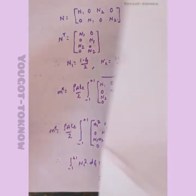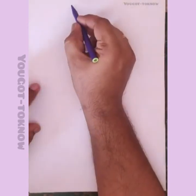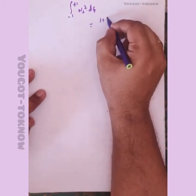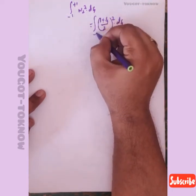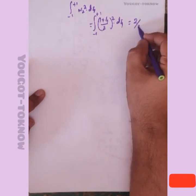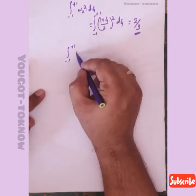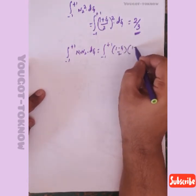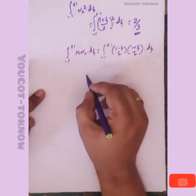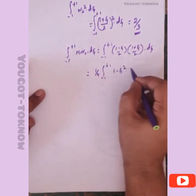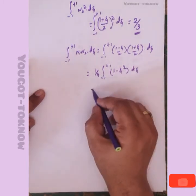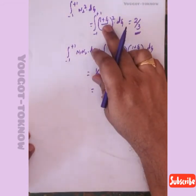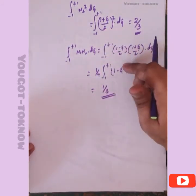Similarly, the integral from minus 1 to plus 1 of N2-squared d-zeta, where N2 equals (1 plus zeta)/2 squared, also gives 2/3. And the integral from minus 1 to plus 1 of N1 N2 d-zeta equals 1 over 4 times the integral of (1 minus zeta-squared) d-zeta, which gives 1/3. These values were already derived in the previous bar element derivation.